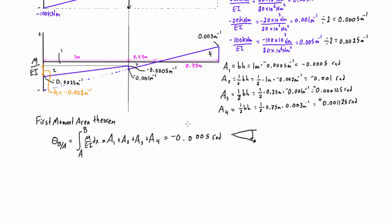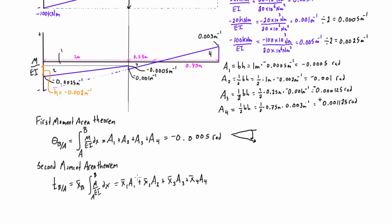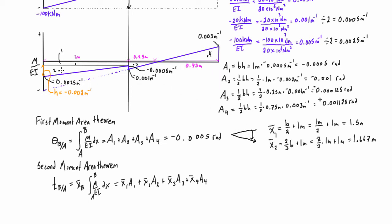Next we calculate the tangential deviation of the tangent line at B with respect to the tangent line at A at point B, using the second moment area theorem: x-bar 1 times A1 plus x-bar 2 times A2, and so on, where x-bar is the distance from the centroid of the shape to point B. So x-bar 1 is base over 2 to get the distance to the edge of the shape, plus 1 meter. x-bar 2 is two-thirds base plus the distance to point B.